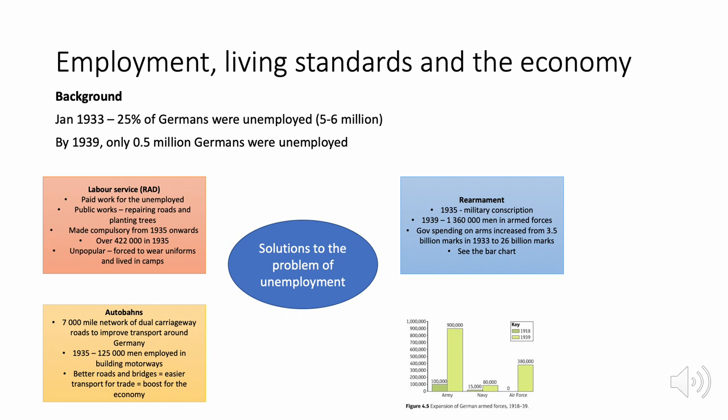The Autobahn programme was a massive infrastructure project — building motorways across Germany. In 1935, 125,000 men were employed building these roads, directly reducing unemployment. Better roads and bridges also improved movement of goods, benefiting the wider economy. Rearmament was another solution: by 1939, nearly 1.5 million men had been conscripted into the armed forces, further reducing unemployment.